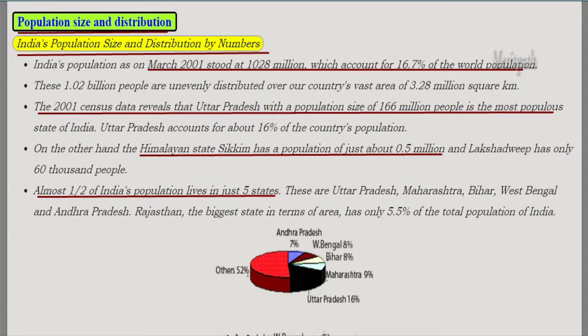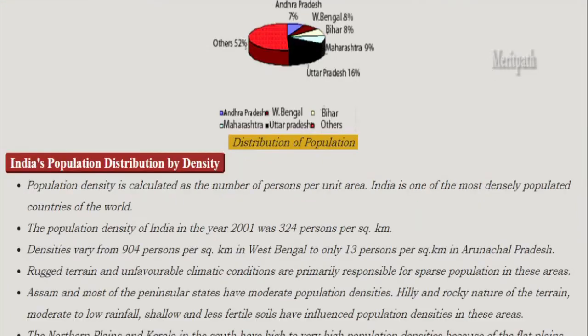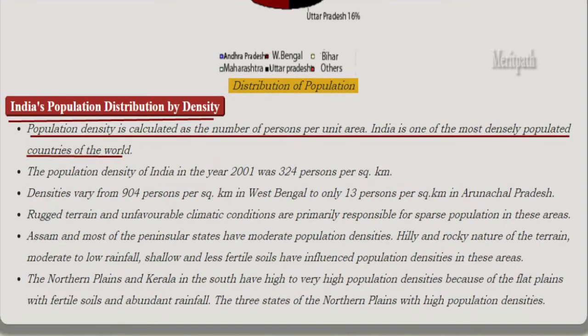The biggest state in terms of area has only 5.5 percent of the total population. In this image we can see the distribution of population over different states in India. Population density is calculated as the number of persons per unit area, and India is one of the most densely populated countries in the world.